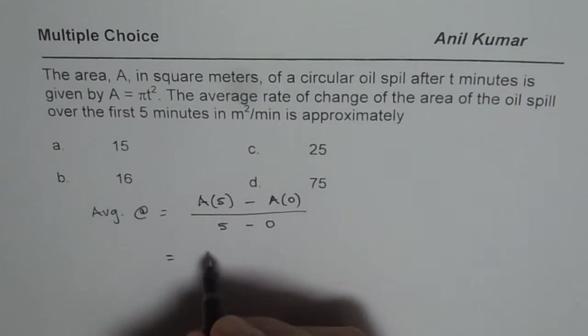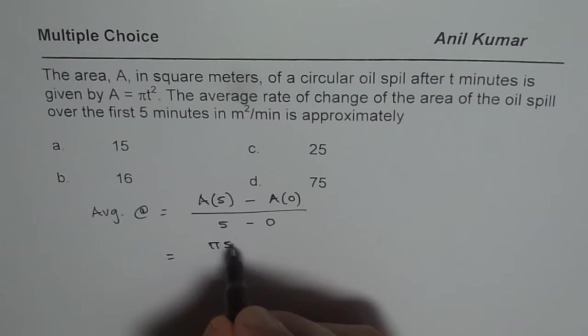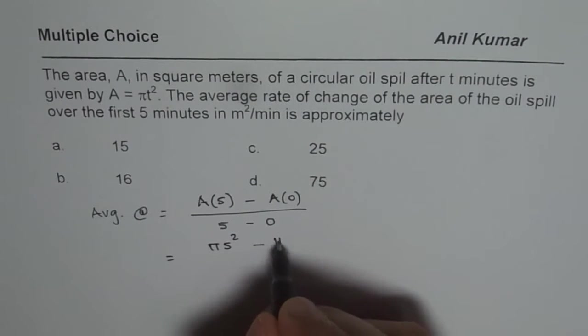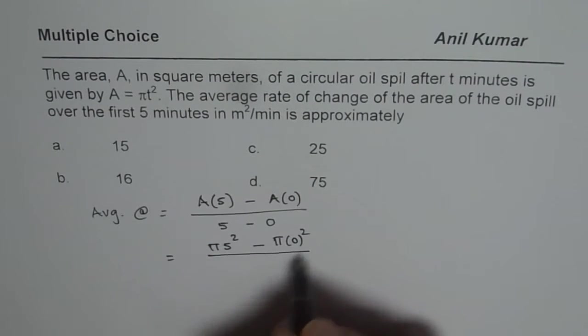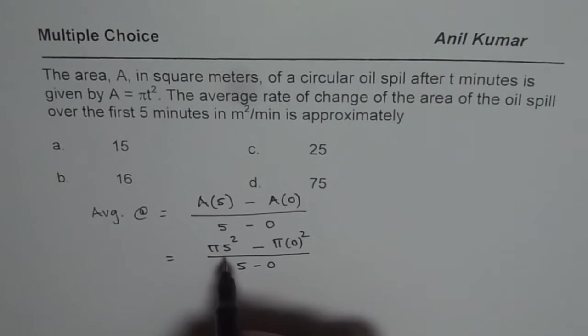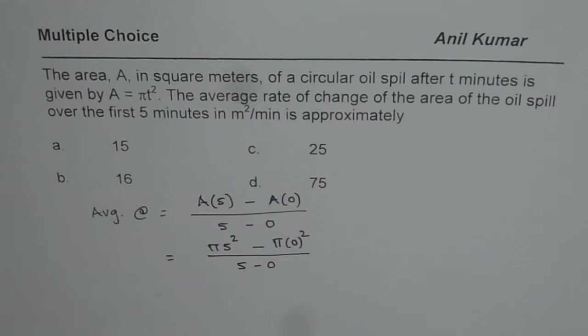If I substitute 5 here, I get 5 square times pi. That is pi T square minus pi times 0 square divided by 5 minus 0. And clearly, we can use the calculator and find the answer.